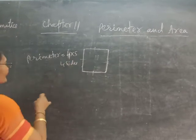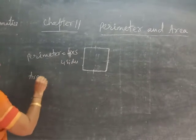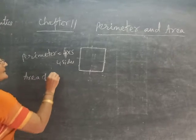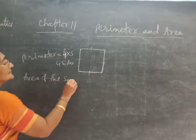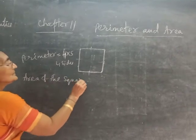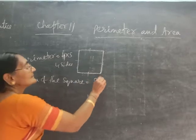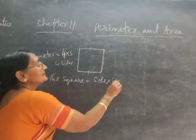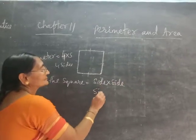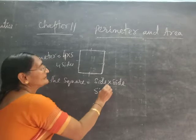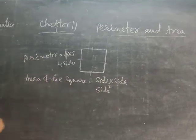What is the area of the square? The area of the square is equal to side × side.